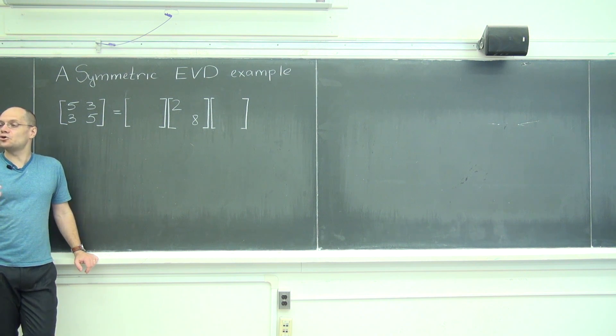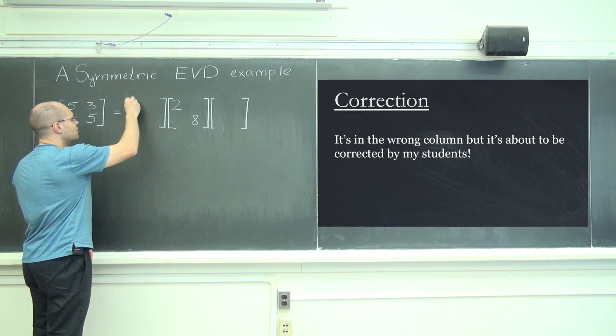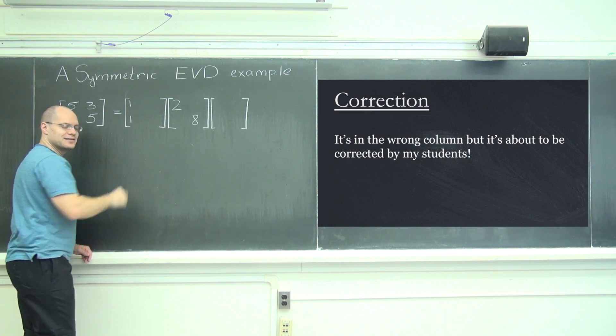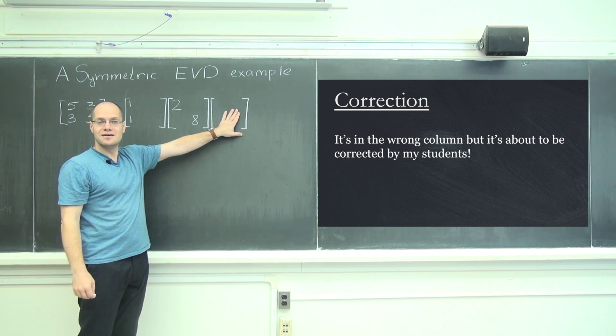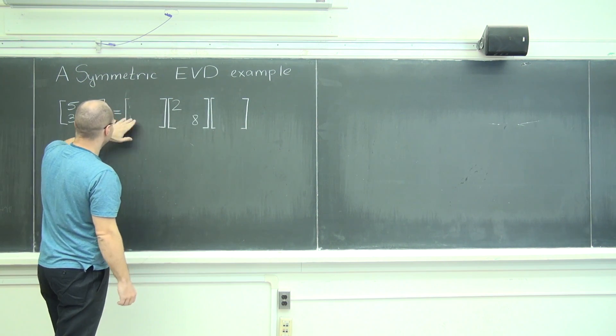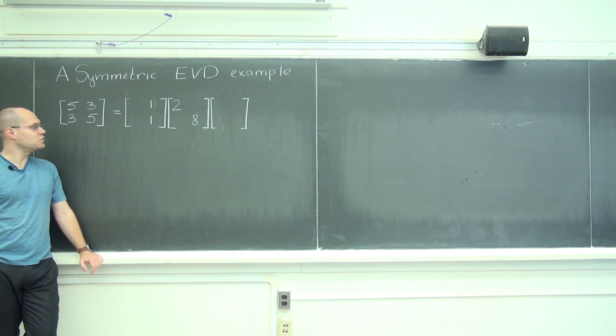And what's the eigenvector corresponding to 8? 1, 1. That's how you guessed it. So 1, 1. Ultimately, this will be a little bit different because we want this to be normalized. Correct. Corresponds to 8. Correct.